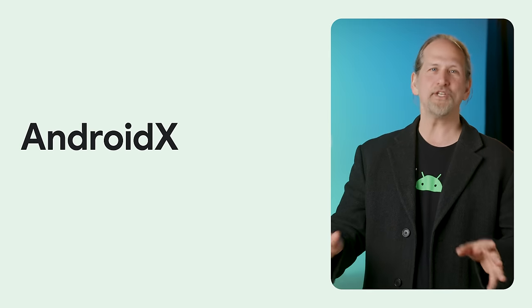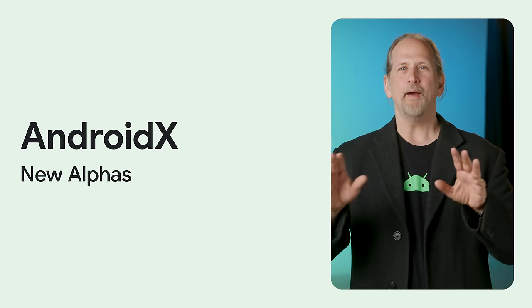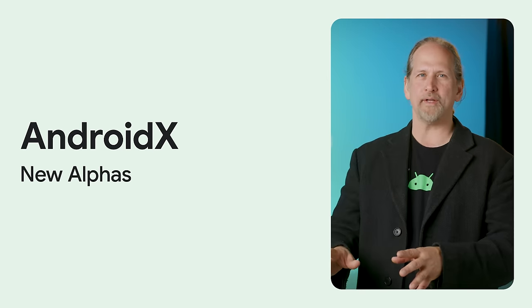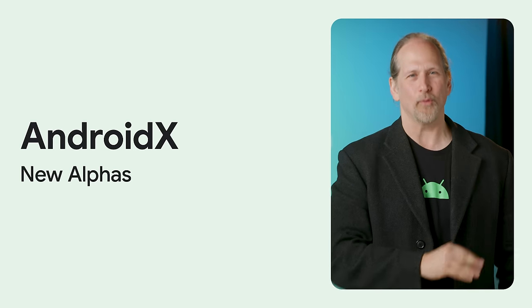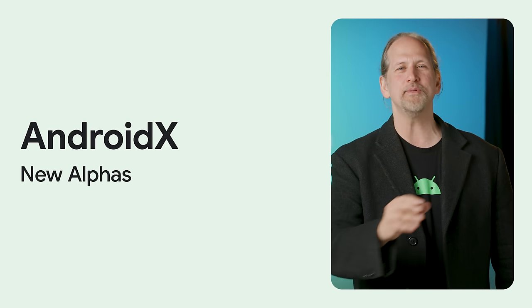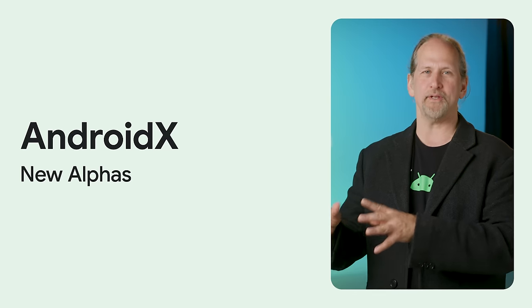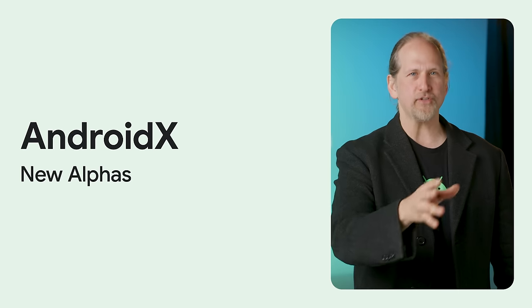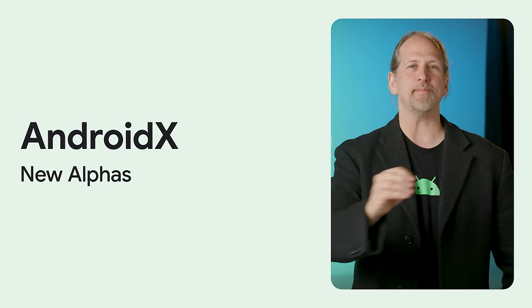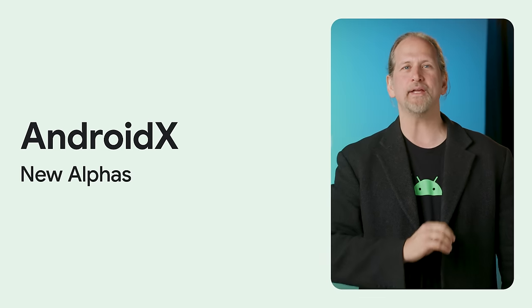There was a bunch of activity over in Android Jetpack, including the first alphas of Annotation 1.8, Benchmark 1.3, Core Remote Views 1.1, Glance 1.1, Profile Installer 1.4, Lint 1.0, Wear Watch Face 1.3, WebKit 1.11, and Compose Material 3 1.3. We also released Hilt version 1.2, with assisted injection support for Hilt ViewModel and Hilt NavGraph ViewModels, as well as Test UI Automator 2.3, which adds support for multiple displays and custom weight conditions.